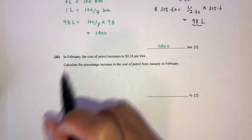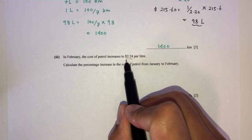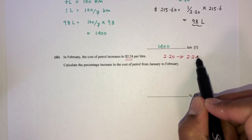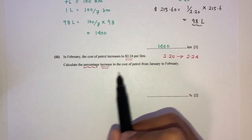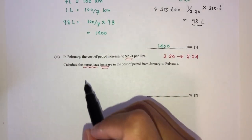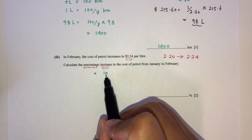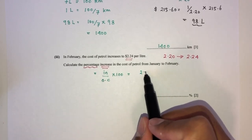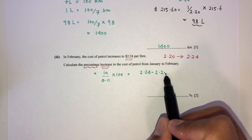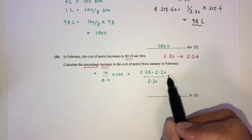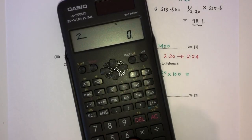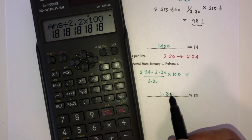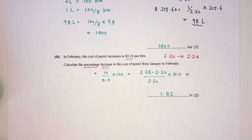Now part three: in February the cost of petrol increases to $2.24. In January it was $2.20. We need to find the percentage increase. The formula is: percentage increase equals (new cost minus old cost) divided by original cost, times 100. That gives (2.24 minus 2.20) divided by 2.20 times 100, which equals 1.82% correct to 3 significant figures.